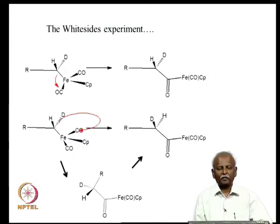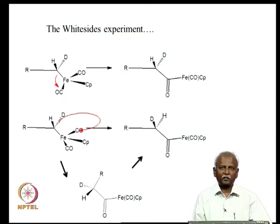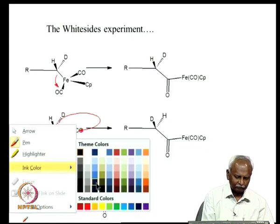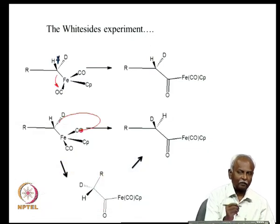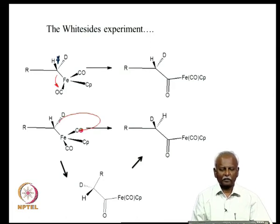There was an extremely useful and very creative experiment carried out by Whitesides, where he carried out an insertion reaction using a molecule that had stereochemistry marked out by hydrogen and deuterium. If you have an R group, a hydrogen, and a deuterium, you can see that this carbon centre is actually chiral. This is the chiral carbon centre which is undergoing migration, and it is migrating to a carbon monoxide which is on the iron. Cp is in fact a cyclopentadienyl group.